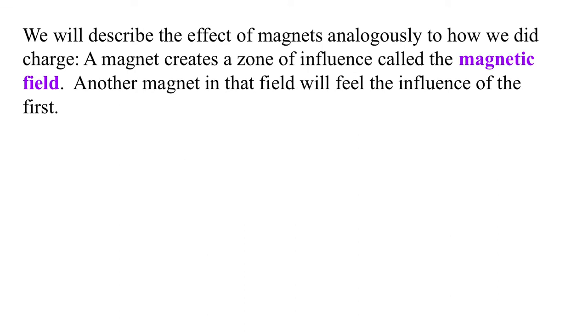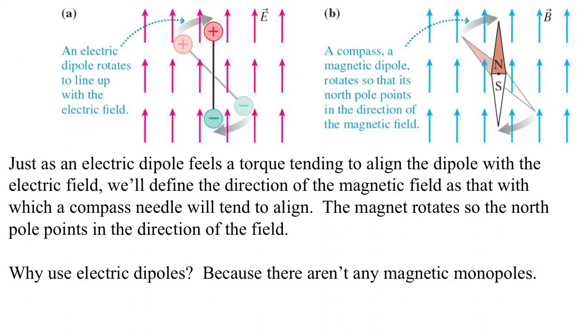We will describe the effect of magnets analogously to how we do a charge. We'll say a magnet creates a zone of influence called its magnetic field. Just as an electric dipole feels a torque tending to align the dipole with the electric field, we'll define the direction of the magnetic fields as that with which a compass needle will tend to align. The magnet rotates so that the north end points in the direction of the field.